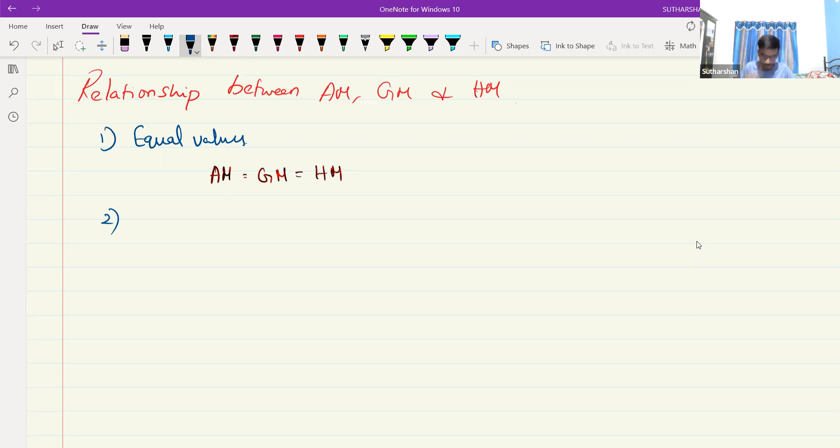Suppose if it has for any real numbers, for any real numbers, arithmetic mean should be greater than or equal to geometric mean should be greater than or equal to harmonic mean.